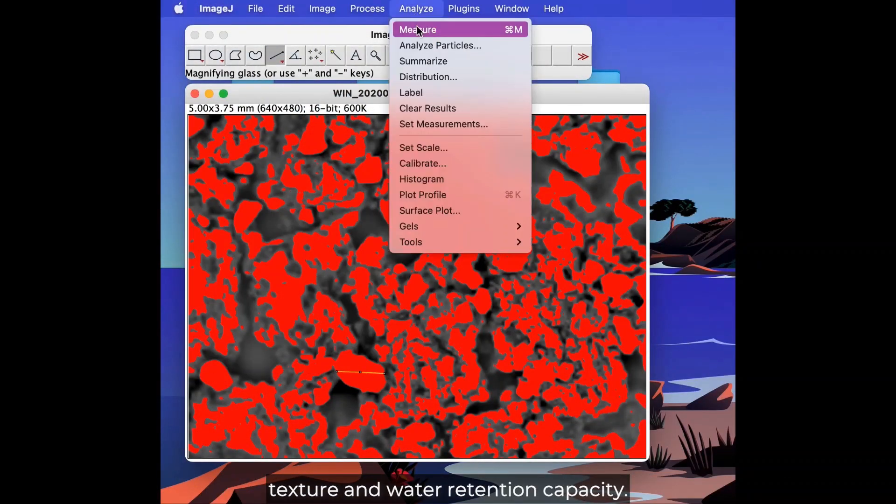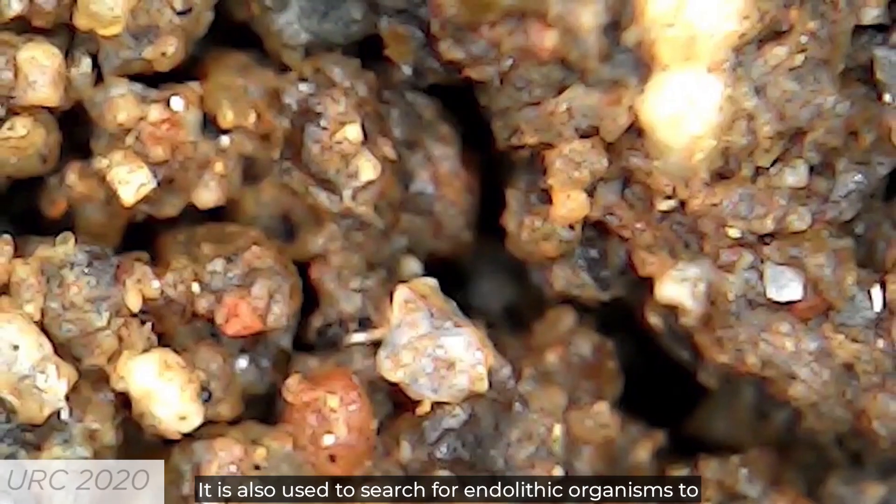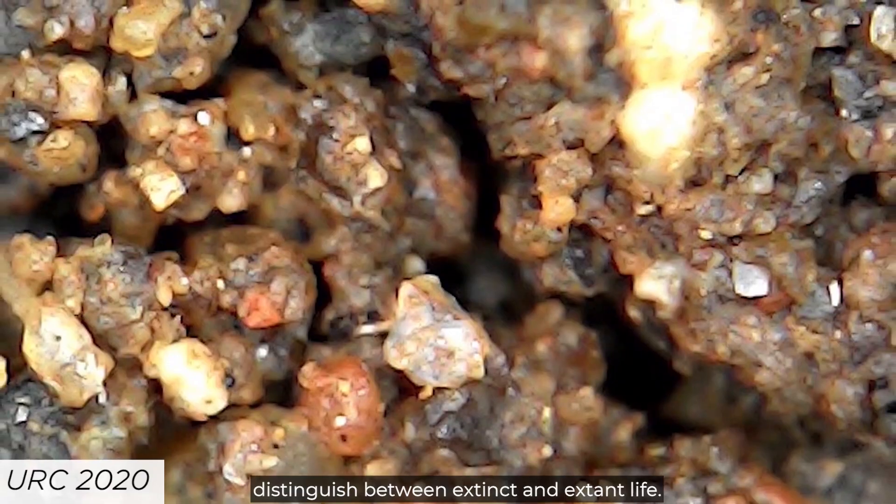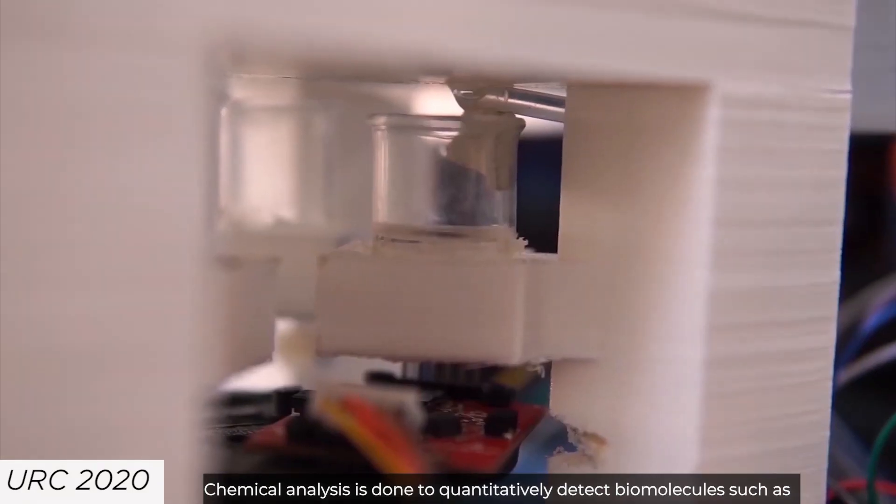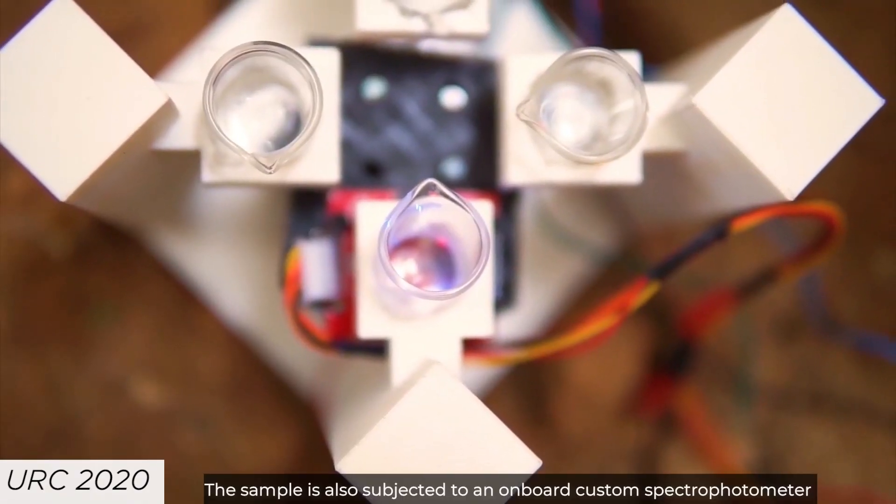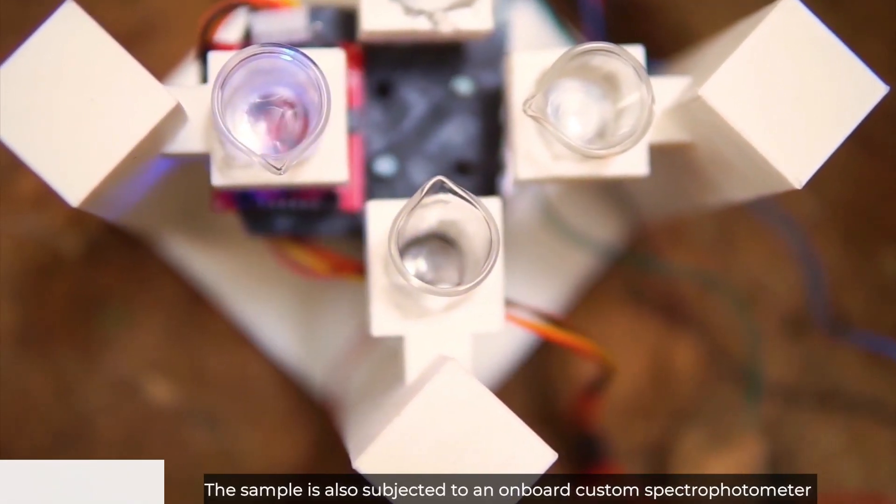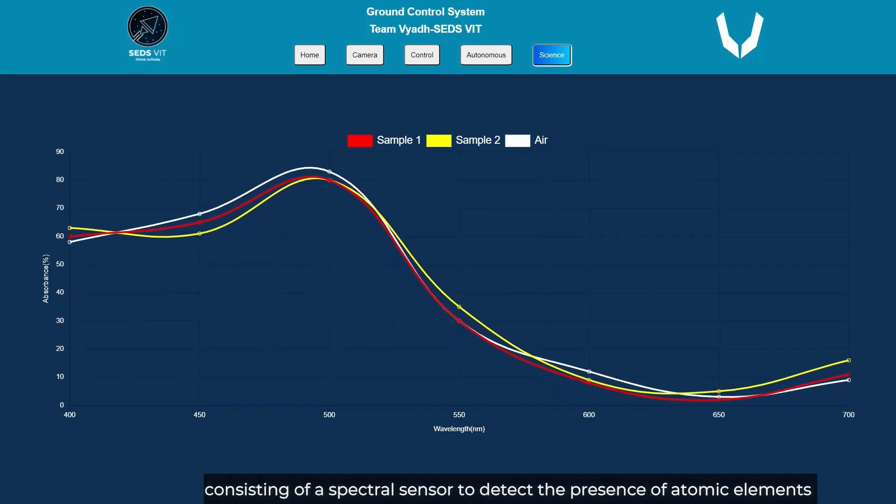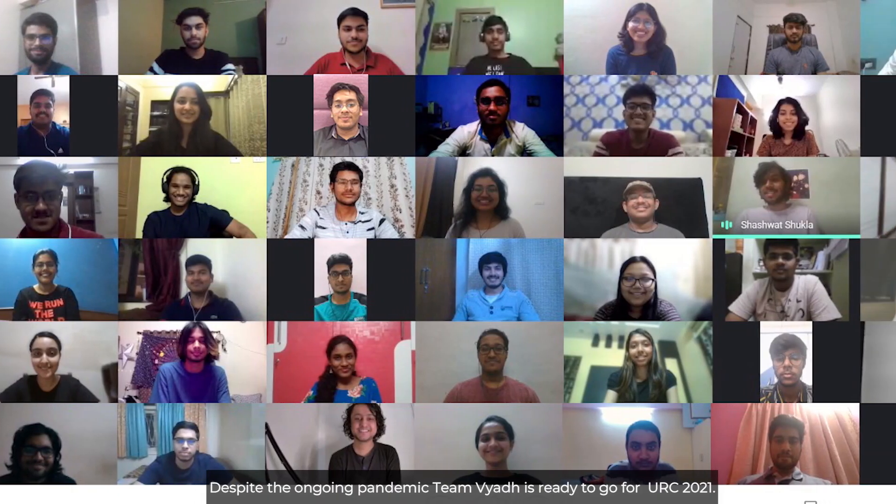It is also used to search for endolithic organisms to distinguish between extant and extinct life. Chemical analysis is done to quantitatively detect biomolecules such as nitrogen, phosphorus, and starch. The sample is also subjected to an on-board custom spectrophotometer consisting of a spectral sensor to detect the presence of atomic elements and organic compounds from the spectral output.